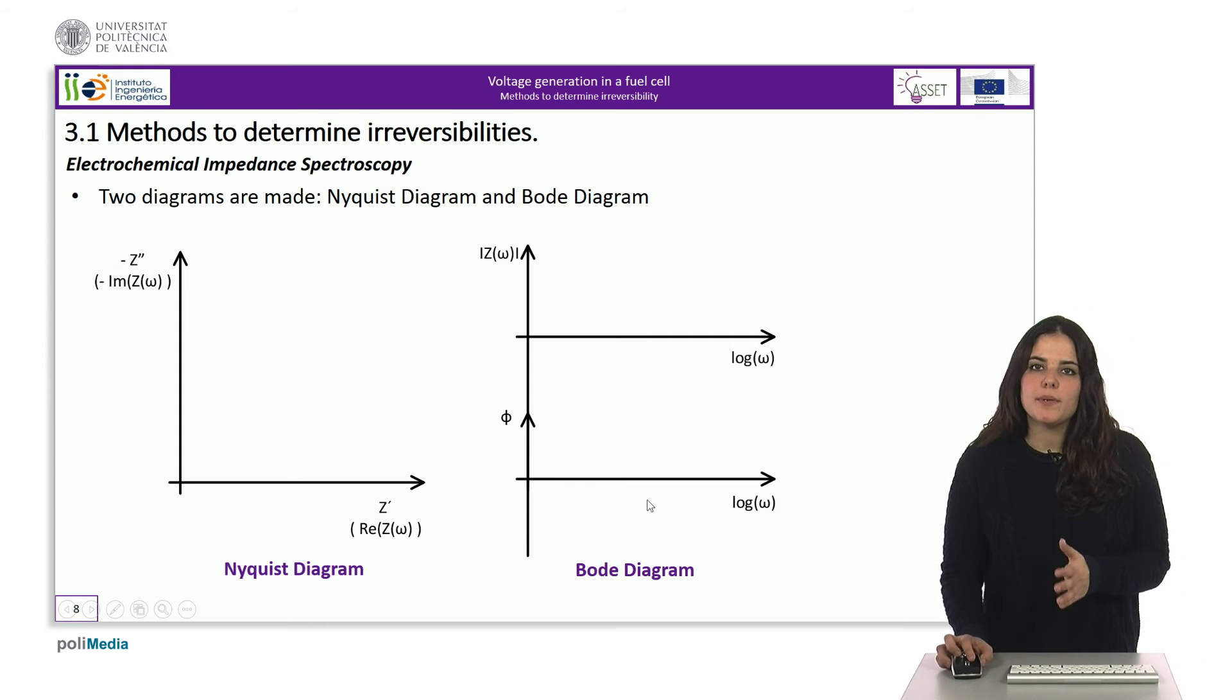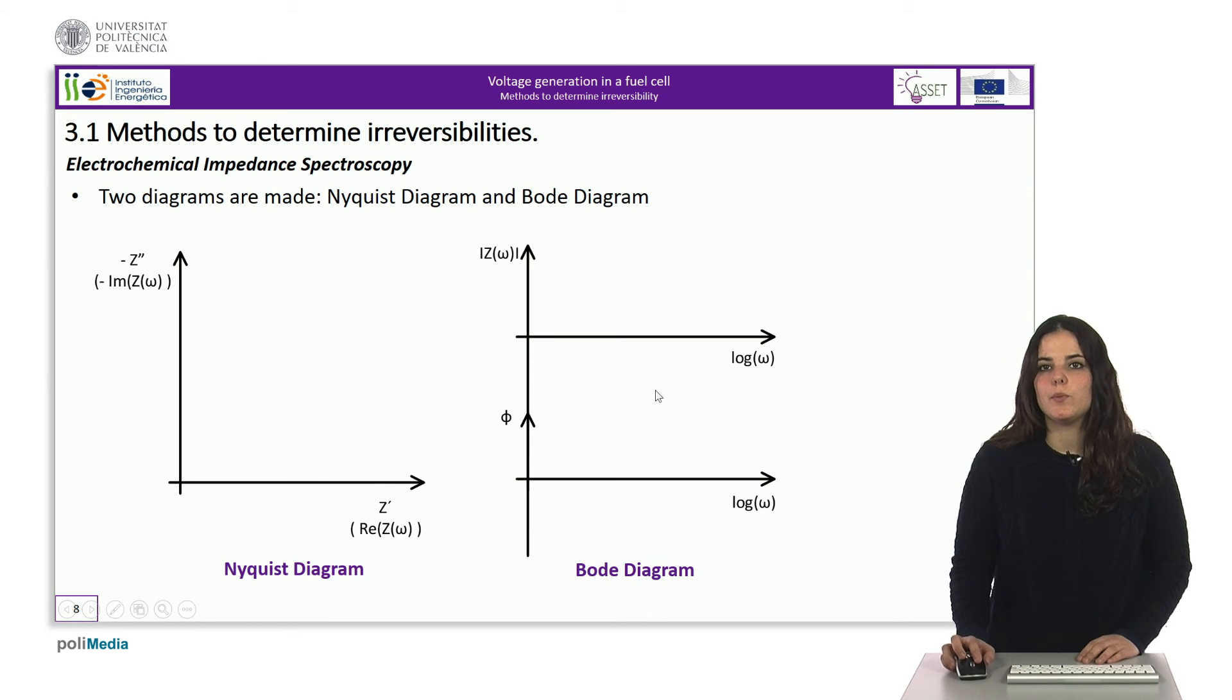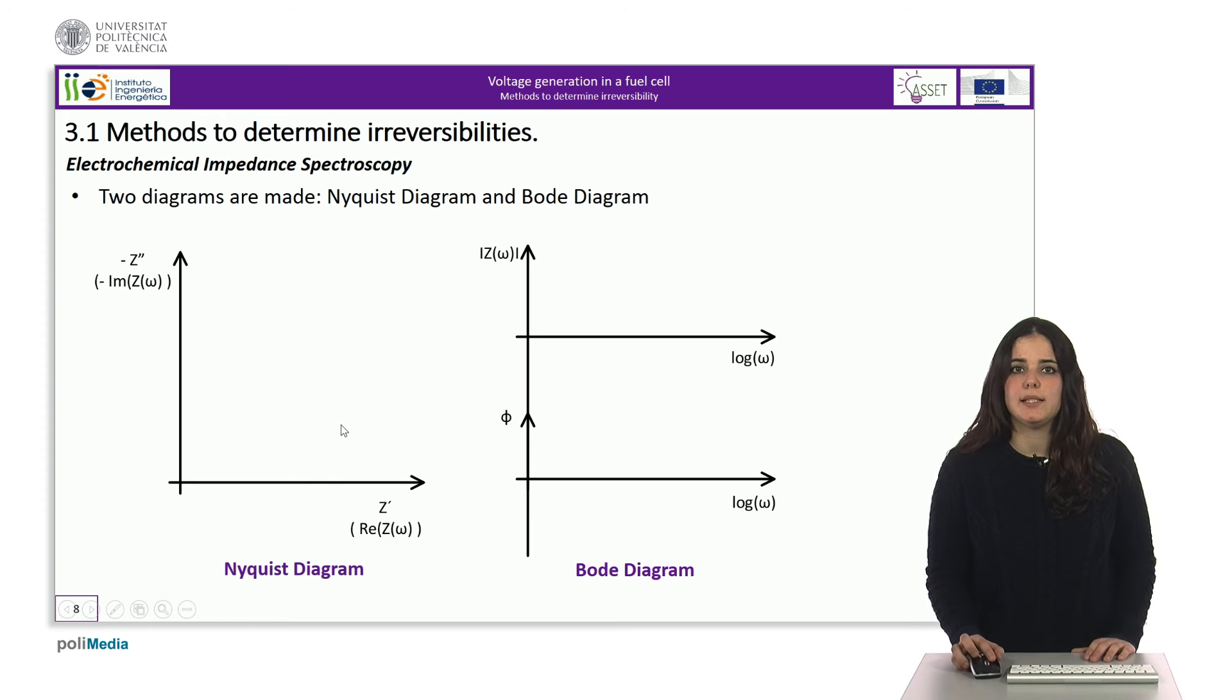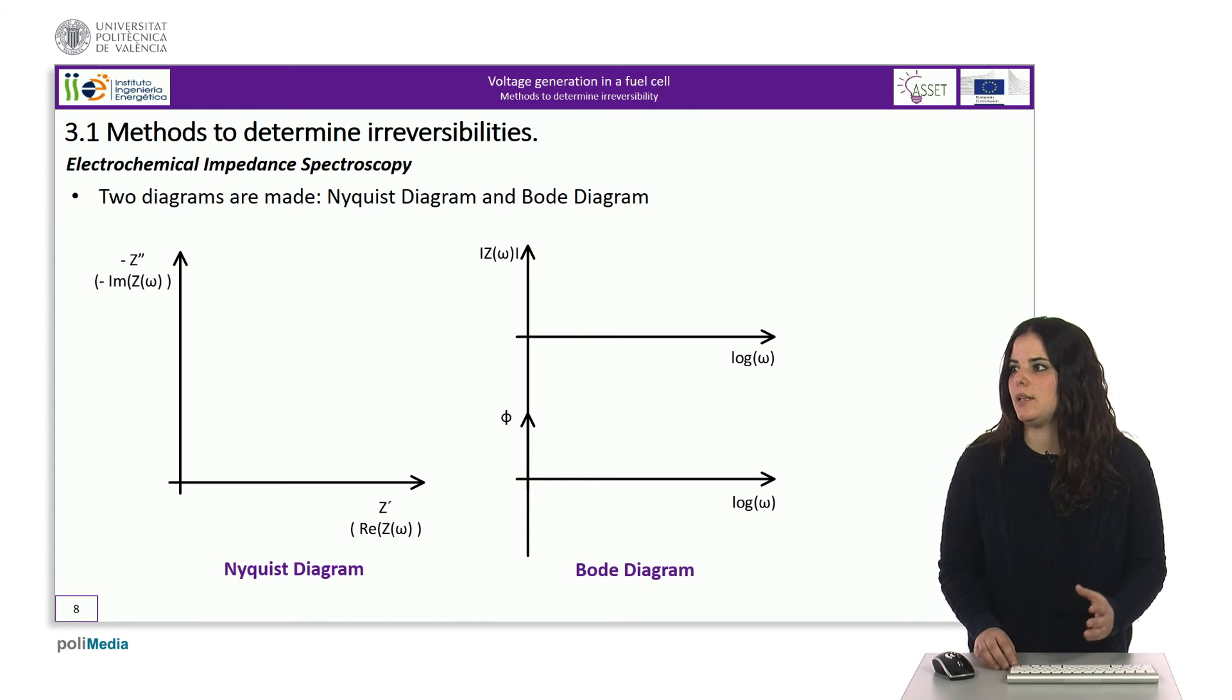These values can be now represented either in a Nyquist diagram or in a Bode diagram. In the Nyquist diagram, the real part of the impedance for each frequency is placed on the X axis. On the other hand, the imaginary part with negative sign is placed on the Y axis in order to make it positive, as the capacitor introduces a negative imaginary part and it is also dependent on the frequency. As for the Bode diagram, the modulus of impedance and phase versus frequency is presented. Each of these diagrams are useful for calculating certain types of irreversibilities.